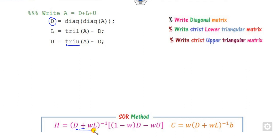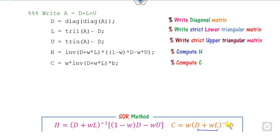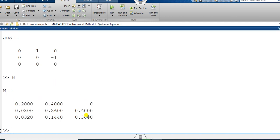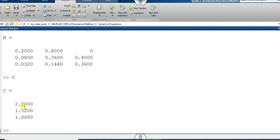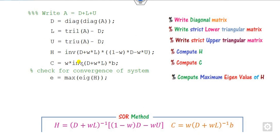Once you know D, L, and U, compute the iteration matrix H = inv(D + omega*L) * ((1 - omega)*D - omega*U), and the constant vector C = omega * inv(D + omega*L) * B. You can see these values stored once you write them in MATLAB.